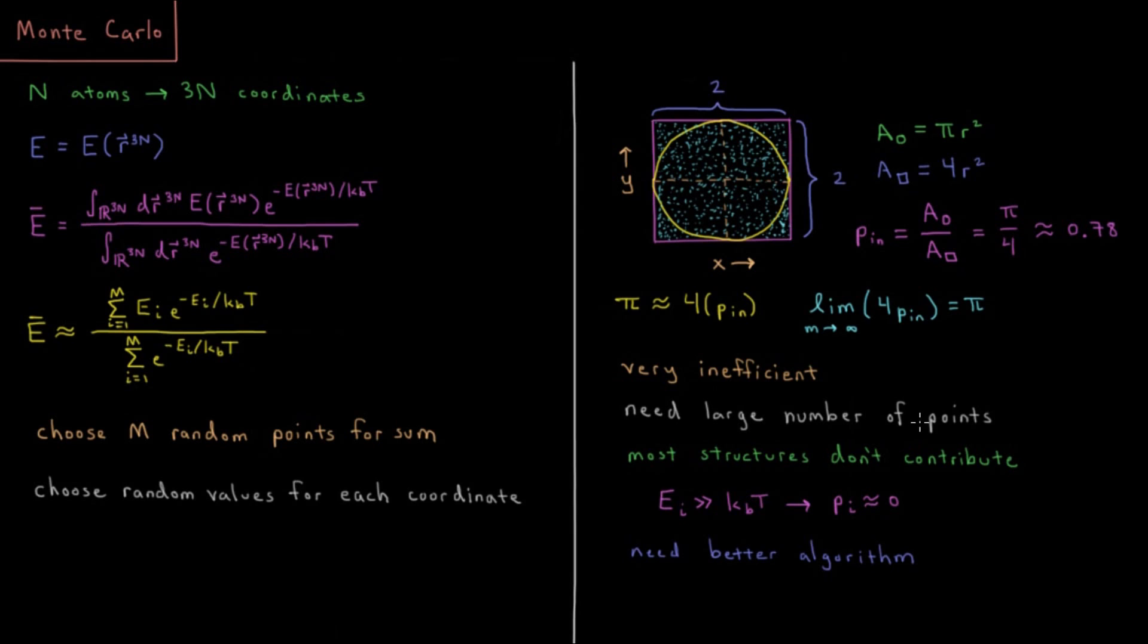And the problem for doing this in a molecular simulation is the fact that most structures don't contribute very much to the average. Most structures, unless their energy is very low, this Boltzmann factor is going to be almost zero. And they're not going to contribute anything to this sum. So the problem is we need something that preferentially gives us points which are low energy points.